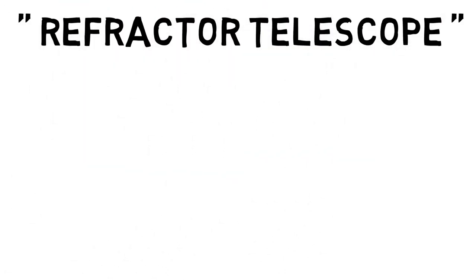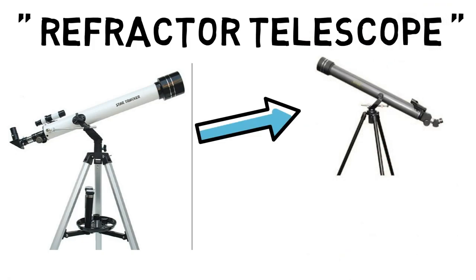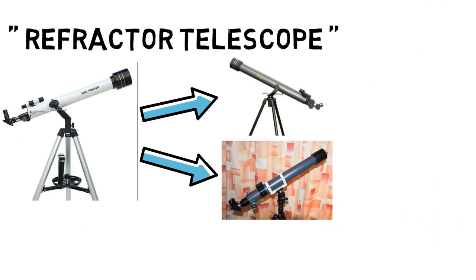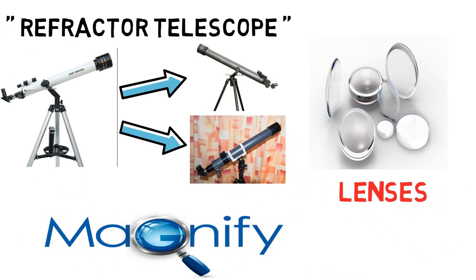Refractor telescope. In refractor telescopes, there are two types: Galilean refractor telescope and Keplerian refractor telescope, which mainly use lenses to magnify the image.